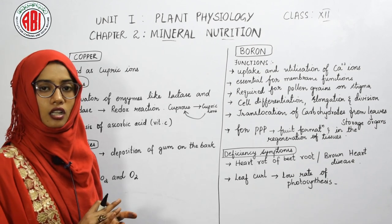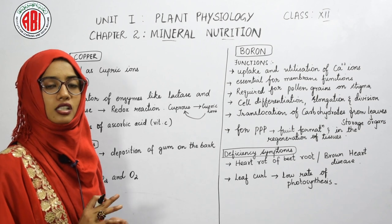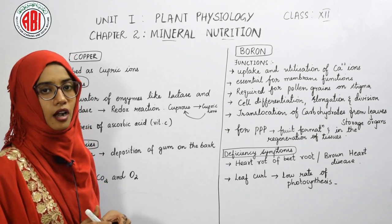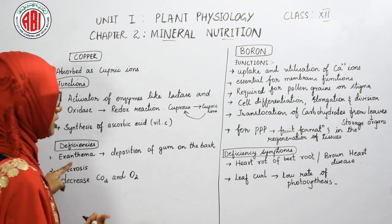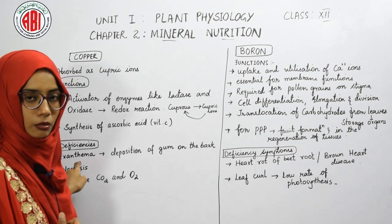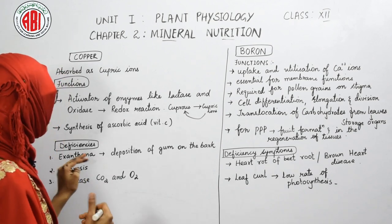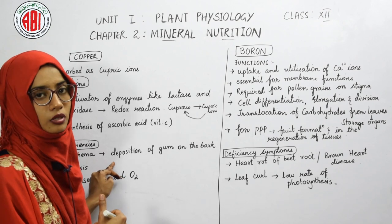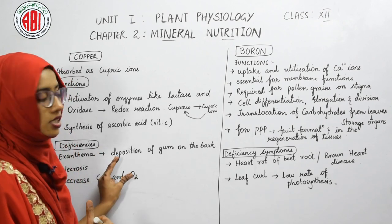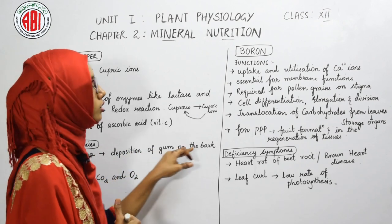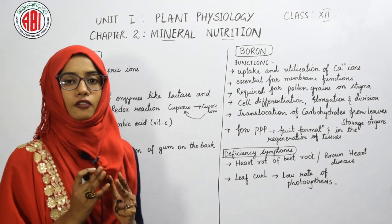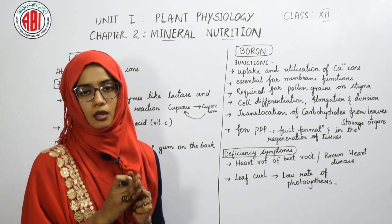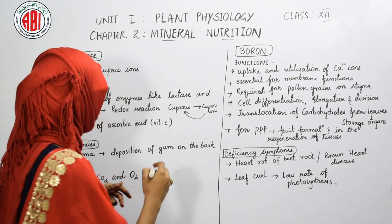If copper is absent, we observe certain deficiency symptoms in the plant body. One is exanthema, which is defined as the deposition or secretion of gum on the bark. The bark contains cork cells or dead cells, and gum deposits on this outer layer.